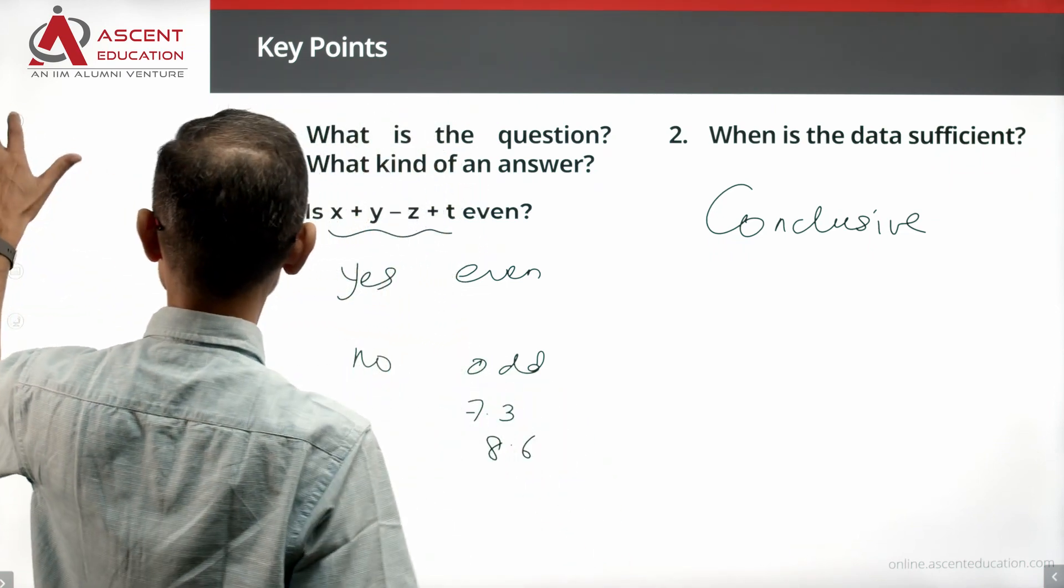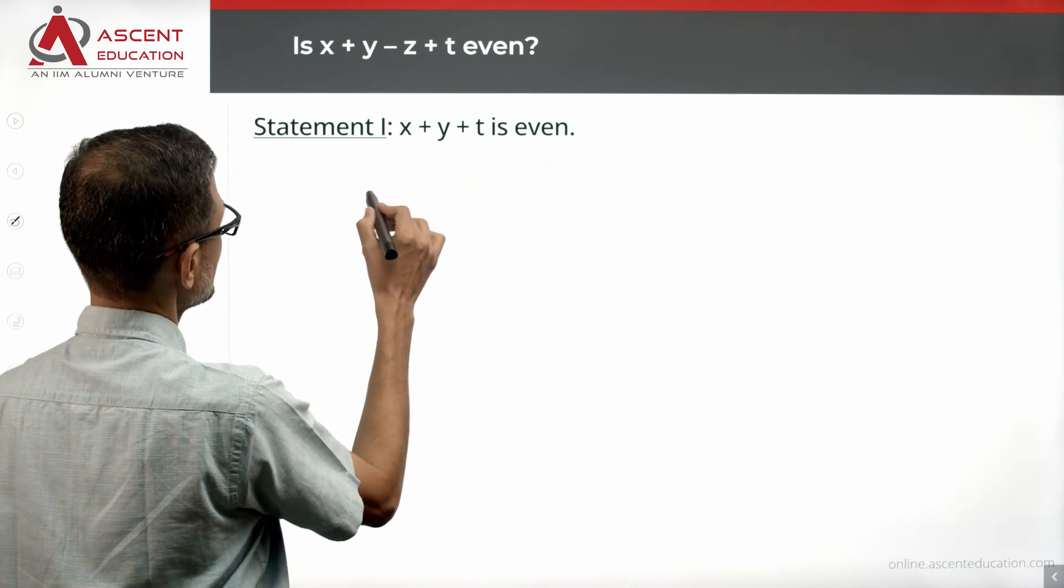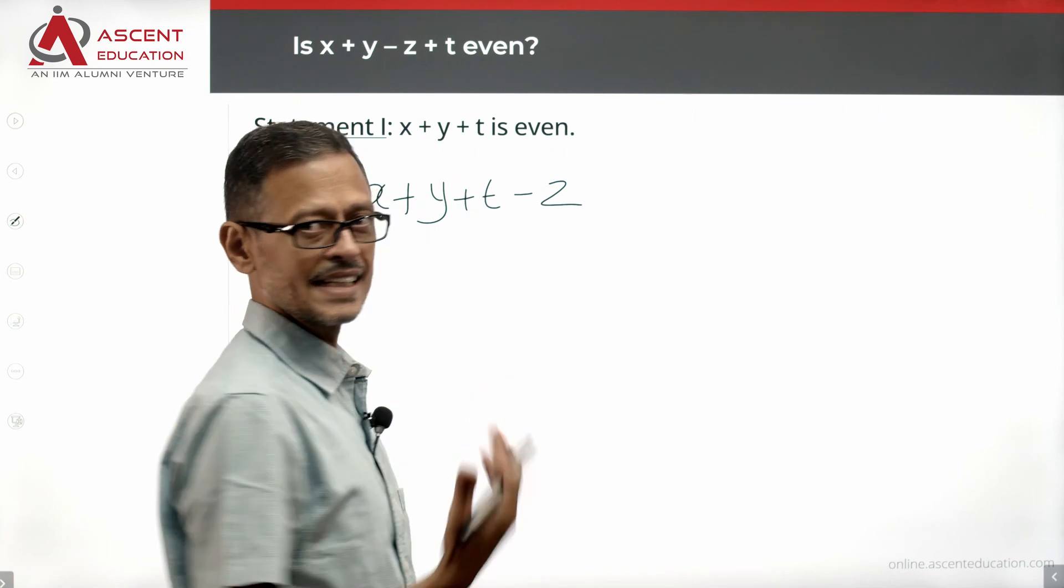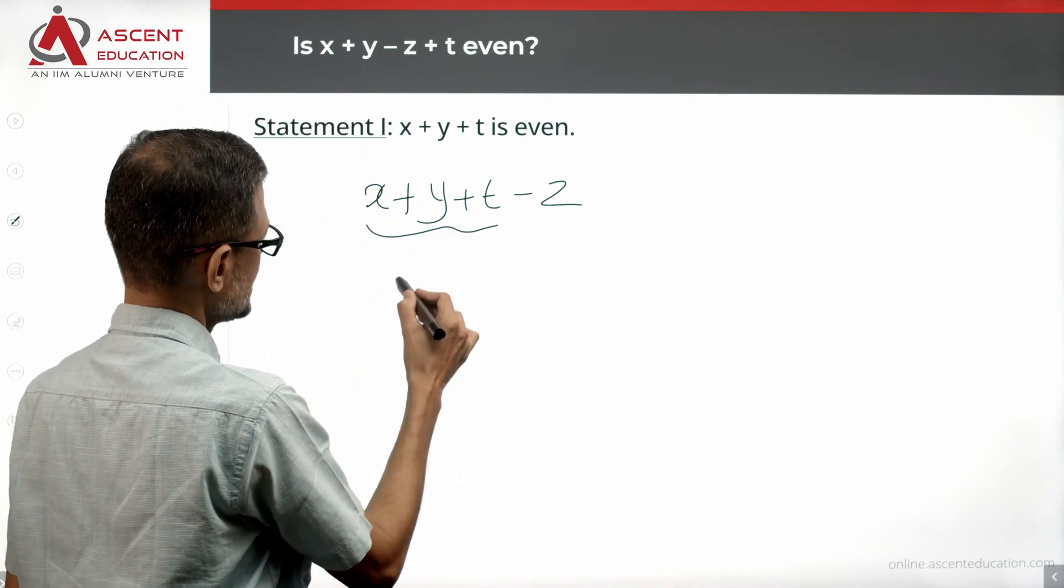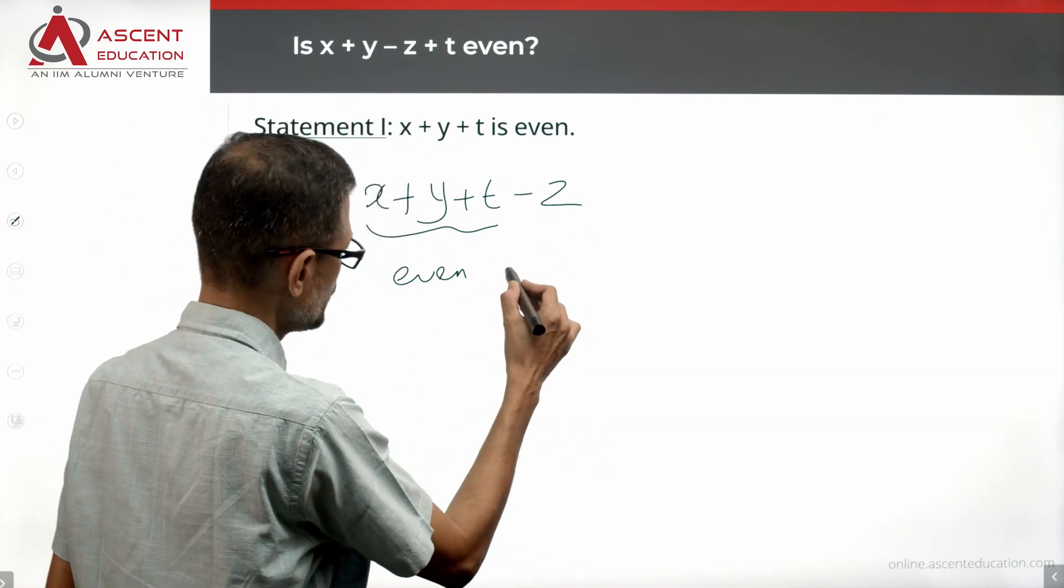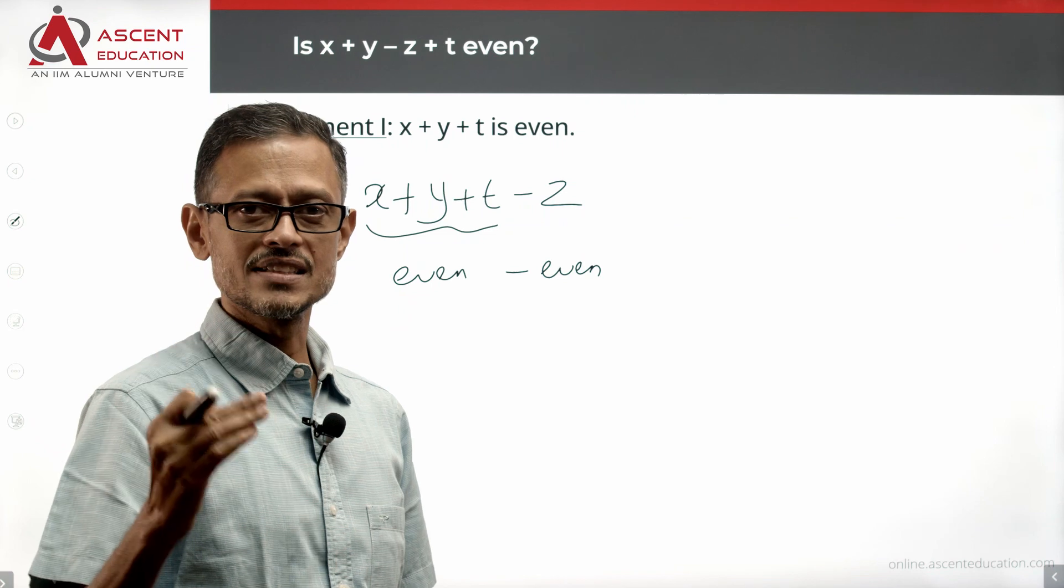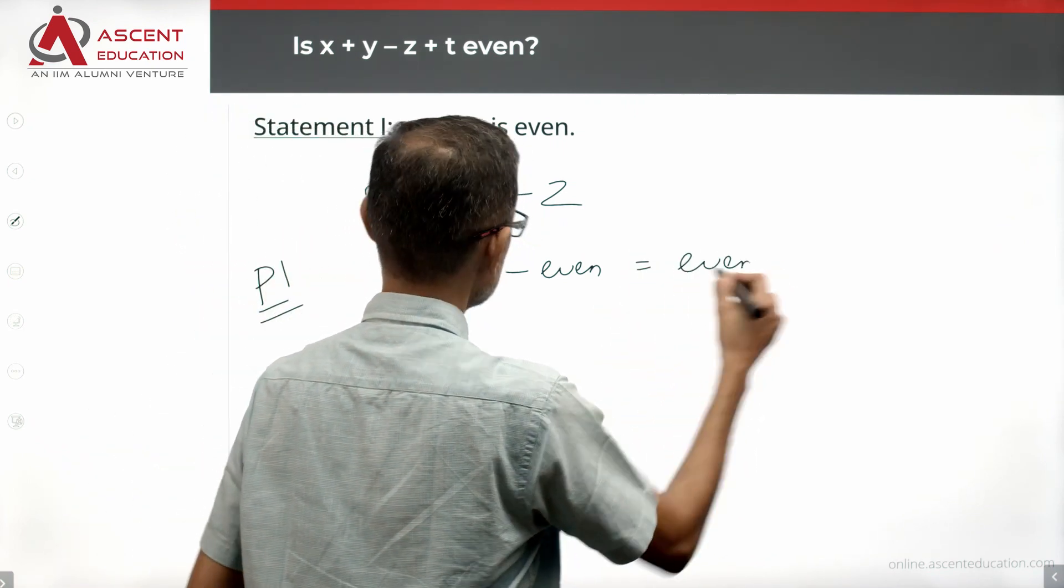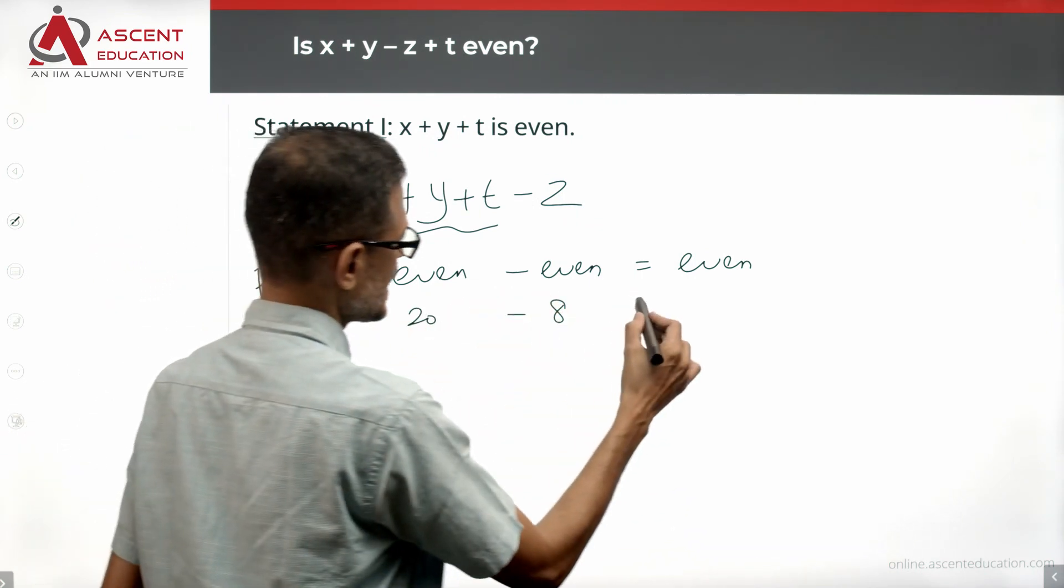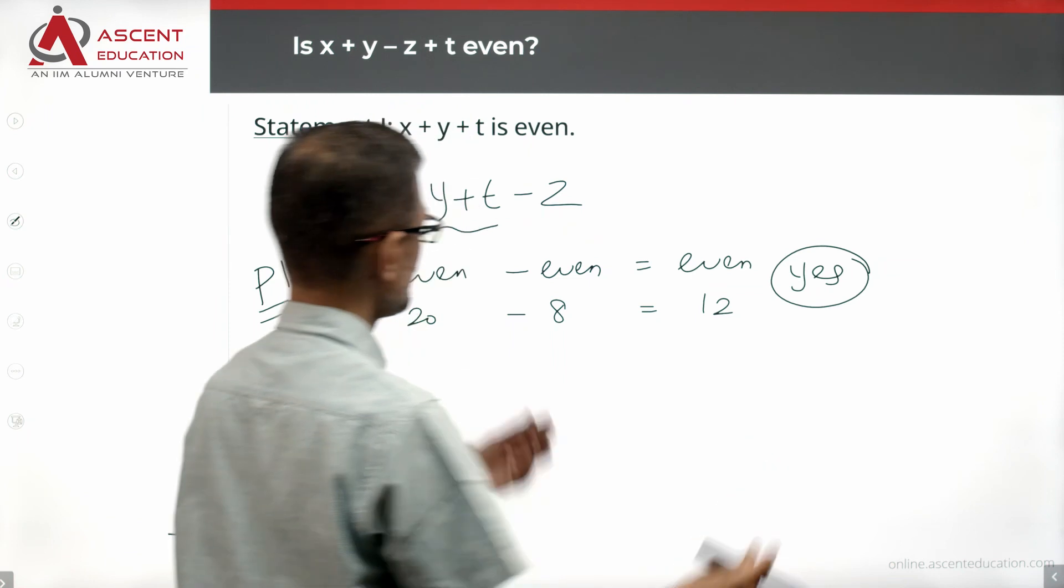On that note, let's get started with statement 1. Statement 1 says x plus y plus t is even. The question asks x plus y minus z plus t, which is the same as x plus y plus t minus z. The final answer depends on z. For example, if z is even - z even is possibility one - then even number minus even number is always an even number. For example, x plus y plus t is 12, z's value is 8. The answer is even. So if z is even, the answer is yes, final result is even.